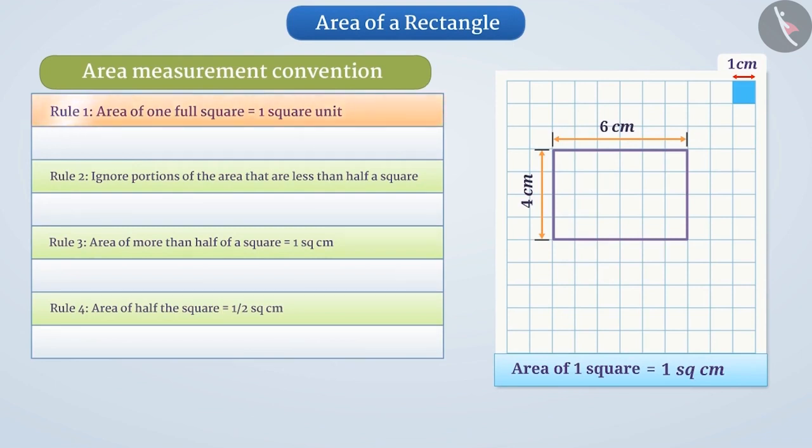Rule 1: The area of 1 full square is taken as 1 square unit. In the given figure, the unit distance is 1 cm. Therefore, the area of 1 full square will be 1 cm².